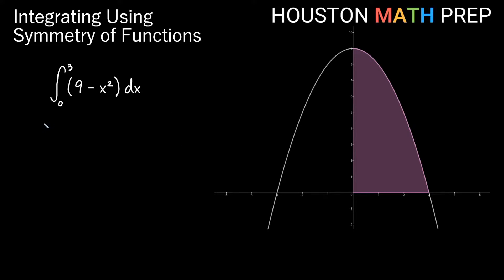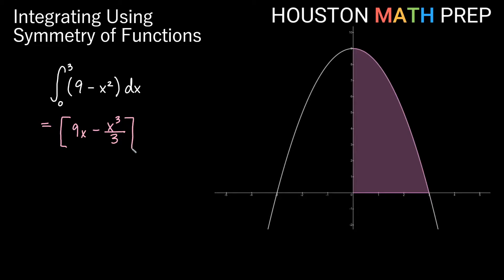Let's go ahead and calculate this. This antiderivative wouldn't be too difficult, and then we're going to look at symmetry of functions. The antiderivative of 9 is 9x, since the derivative of 9x is 9. Then by the power rule, the power goes up by 1 for x squared, giving us x cubed, and we divide by the new power — so we get x cubed over 3 as the antiderivative for the second term.